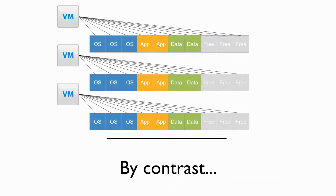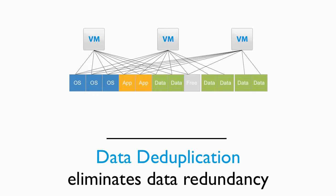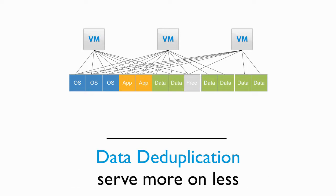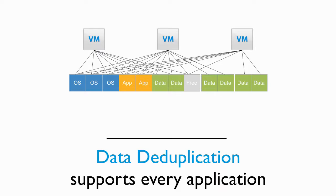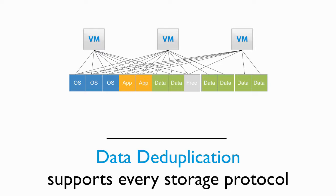By contrast, I'd like to show you the storage savings available by enabling data deduplication for your production footprint. Data deduplication eliminates data redundancy, resulting in virtual machines being able to share single copies of data that's common between them, and only consume storage for the data that is unique to each individual VM. Data deduplication results in you being able to serve more virtual machines on less storage than with any other storage savings technology. Data deduplication is also a transparent technology, which means it provides support for every application set, every VMware configuration, and runs with any storage protocol.